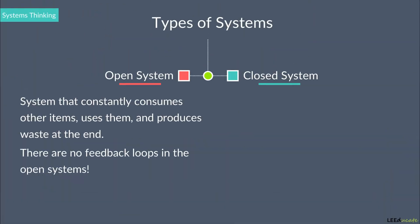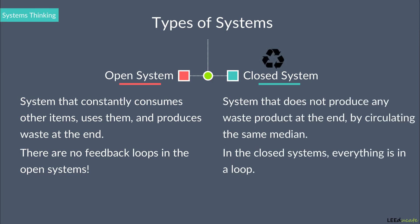However, in nature, everything is in a loop, and thus no open system exists. Therefore, this is called a closed system, which does not produce any waste product at the end. The system continues independently.